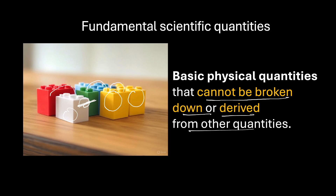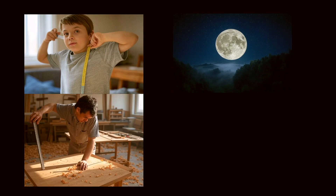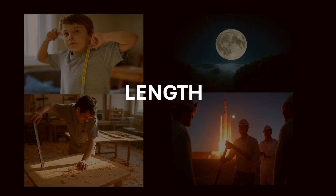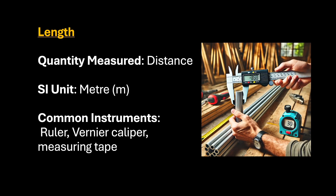Let's begin with the most intuitive and visible quantity — the physical quantity which helps us know our height or how far the moon is, whether you're building a table or launching a rocket. It all begins with length. Length helps us in measuring distance, whether you're finding distance between two objects, finding the diameter of a rod, or simply calculating the depth or height. The SI unit is meter and we write it as small m. Common instruments used are ruler, vernier caliper, and measuring tape.